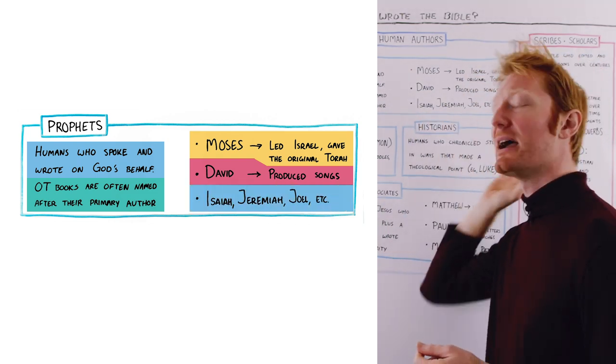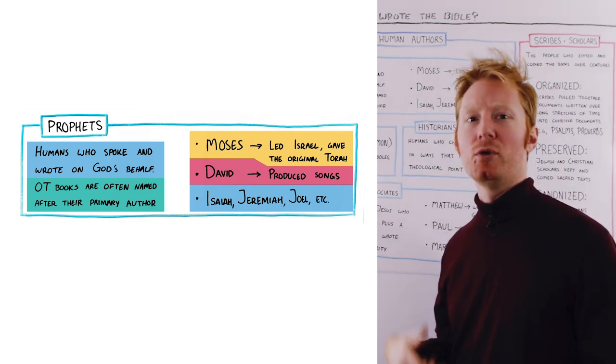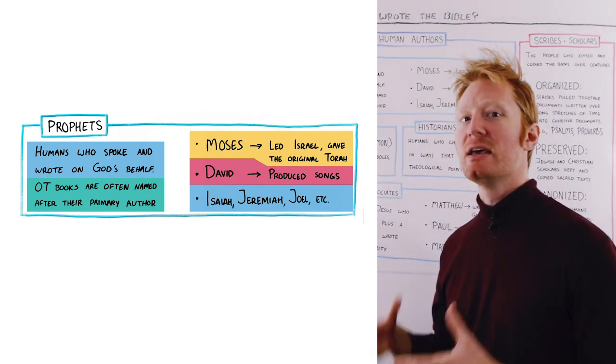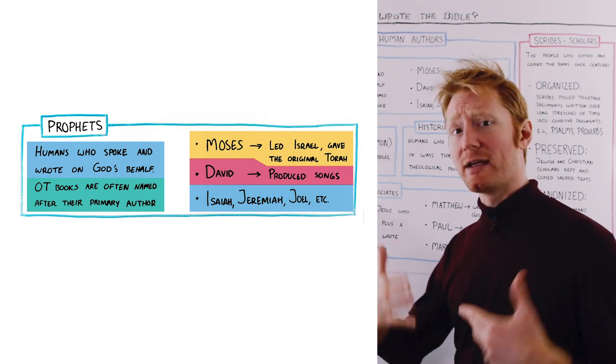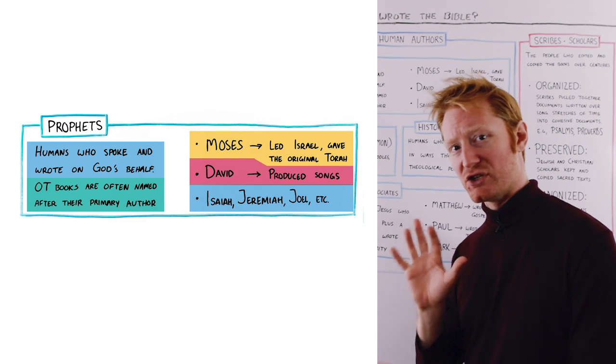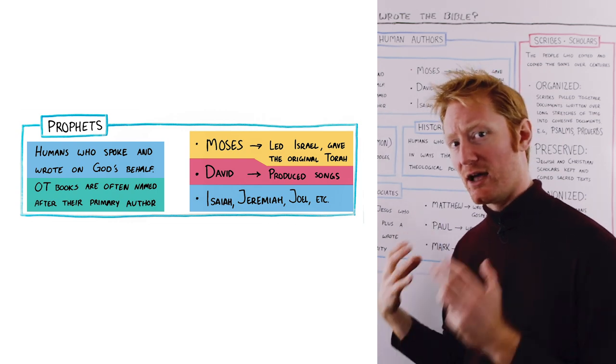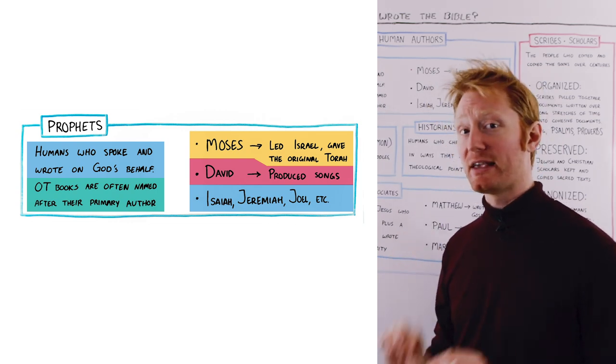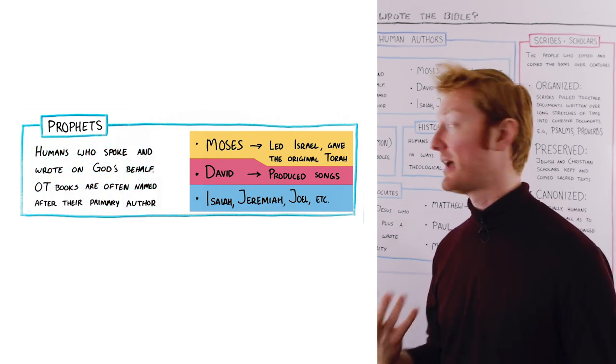Isaiah, Jeremiah, Joel, these are those prophets whose books are named after themselves. They wrote these long, epic poems about how the relationship with Israel and their God was playing out. Very key contributors to the text of the Bible.